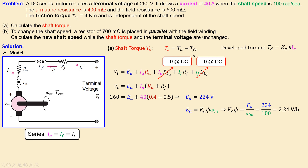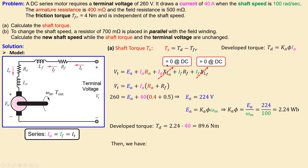Now we can calculate the developed torque using this formula. Substituting the motor constant of 2.24 and the armature current of 40 amps gives 89.6 newton meters for the developed torque. The shaft torque is then the developed torque minus the friction torque: 89.6 minus 4 equals 85.6 newton meters. That's the answer to question A.